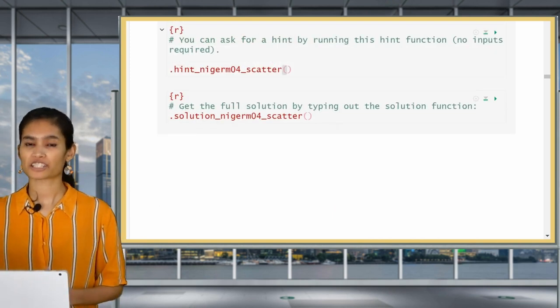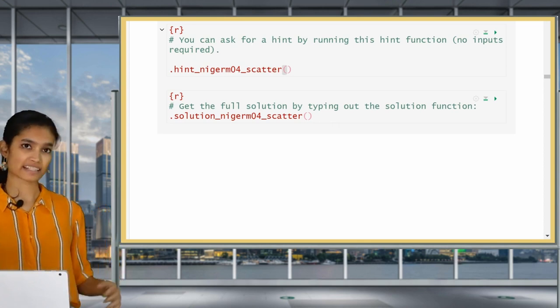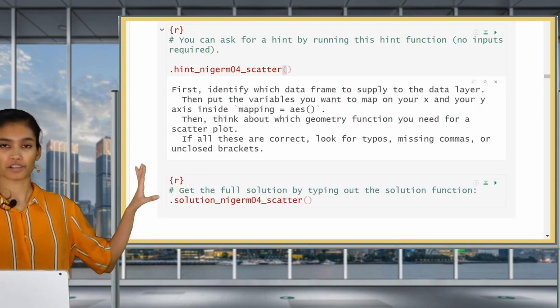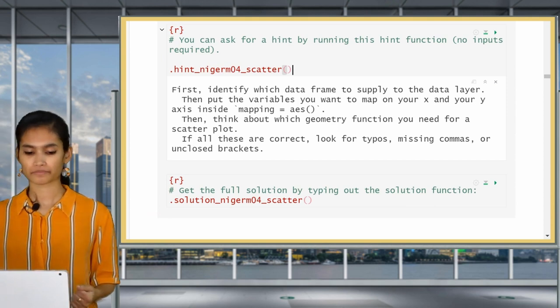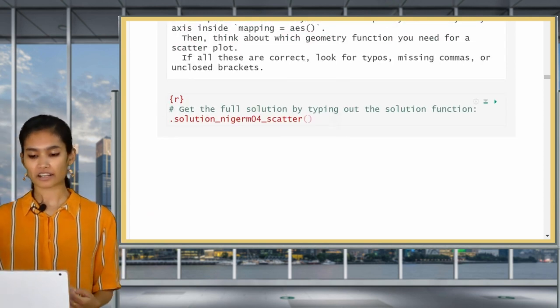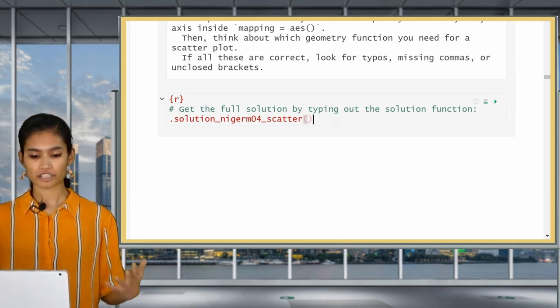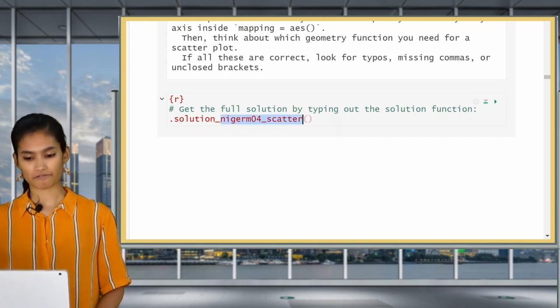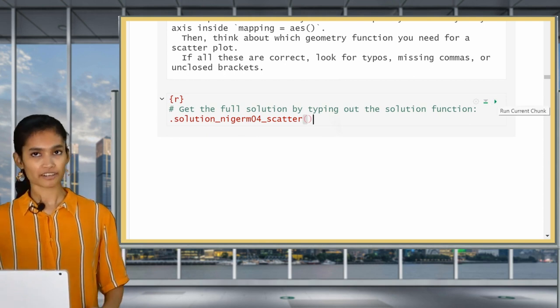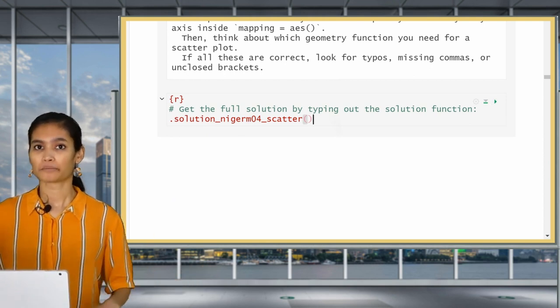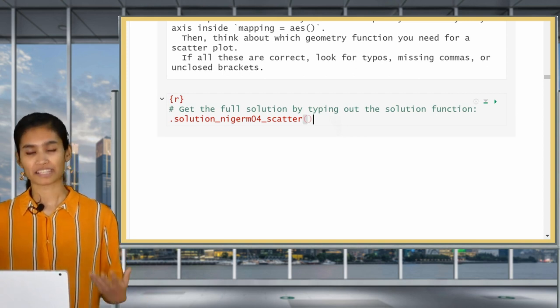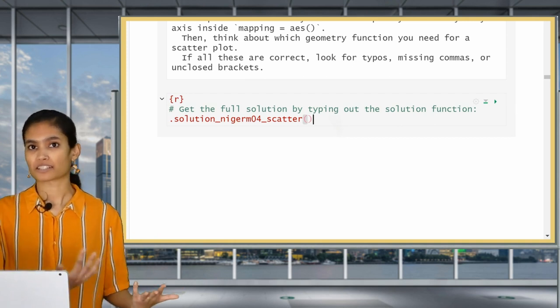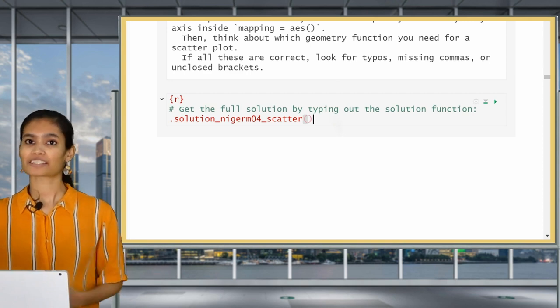Then what you can do is check your answer by running the check function. Each practice question will have a different check function. You don't need to put any inputs in there. Just run the code and it will tell you, now it says wrong, please try again, because I purposefully entered the wrong answer. If you're stuck on how to answer the question, each practice question also has a hint function, which also requires no input. You can run the hint function and it will give you some text to help you answer the question. Finally, if you're still stuck on the question, you can write in the solution function, which is just dot solution underscore, followed by the object name for that practice question. Now you can pause here and in the RMD, do the practice question, submit it and check it.